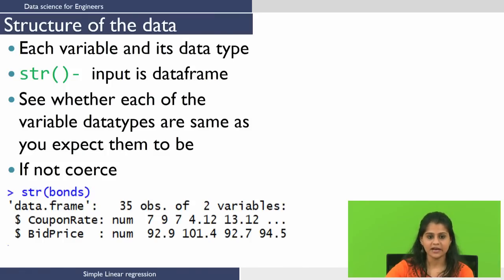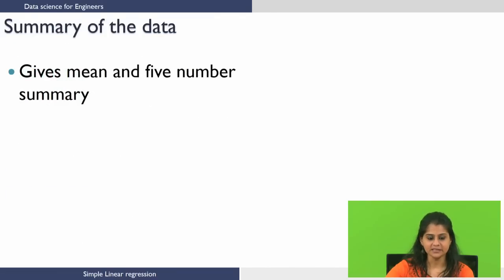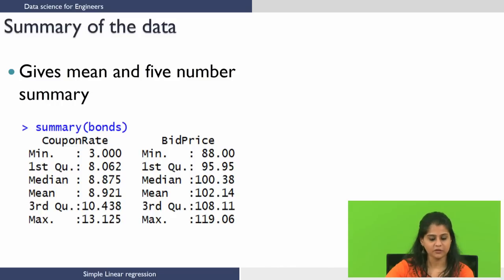For this data set, running str(bonds) gives the following output: bonds is of type data frame with 35 observations of two variables. The first column, coupon rate, is of type numeric, and the second column, bid price, is also of type numeric. The summary function followed by the data frame name — in this case bonds — will give us the five-number summary and mean. So we get the five-number summary and mean for coupon rate, and also the five-number summary and mean for bid price.